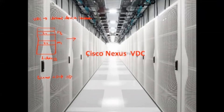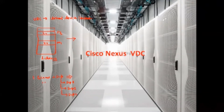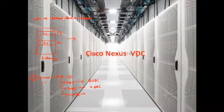The number of VDCs depends on the supervisor engine model and the license. Whether it is Sup1, Sup2, or Sup2E makes a difference. By default, with one license you can create 4 VDCs. For Sup2E you can create 8 VDCs. Out of those, one will be the default VDC which is already there, and the rest are non-default VDCs.